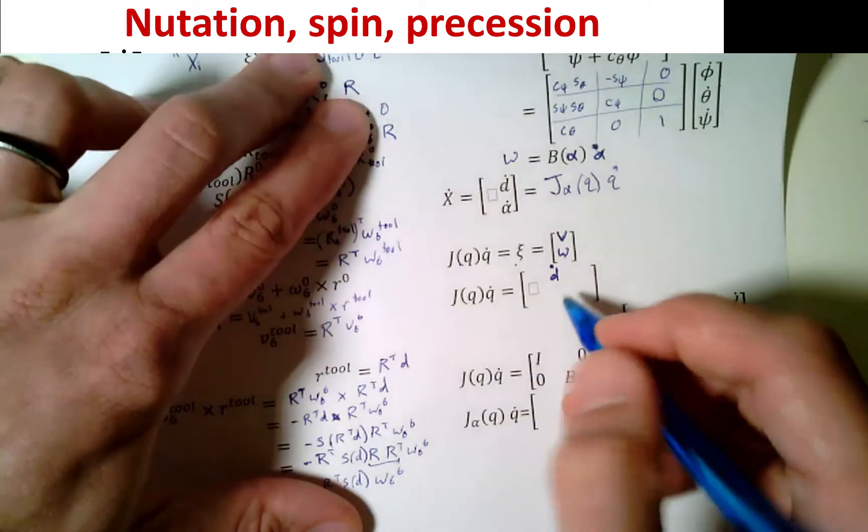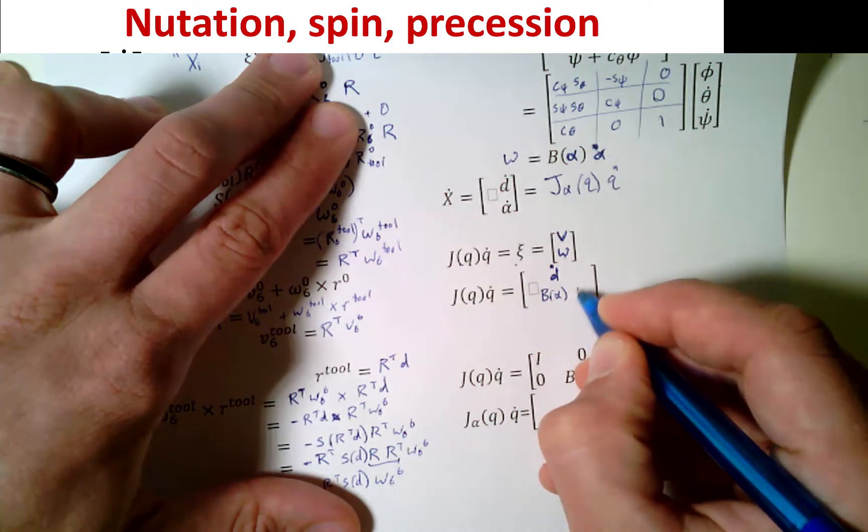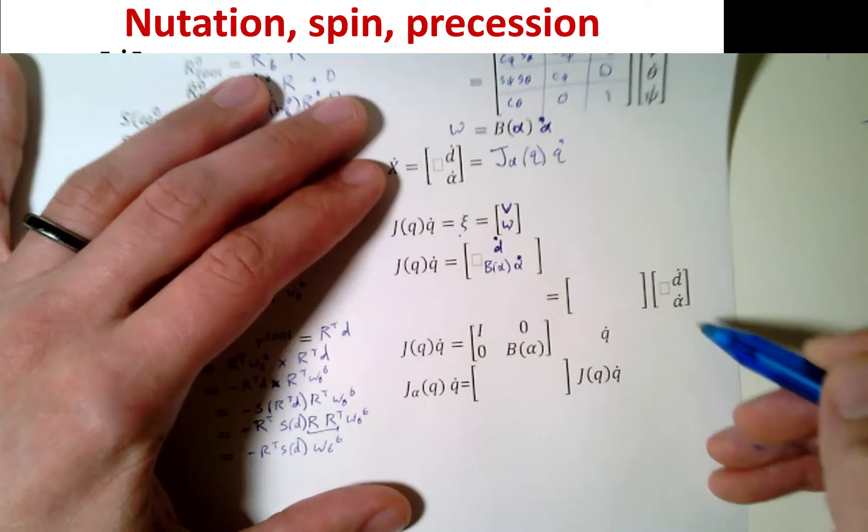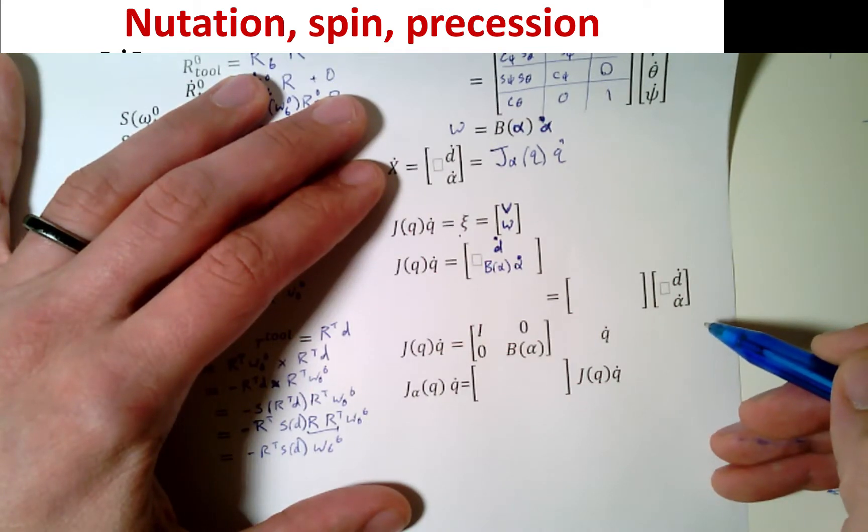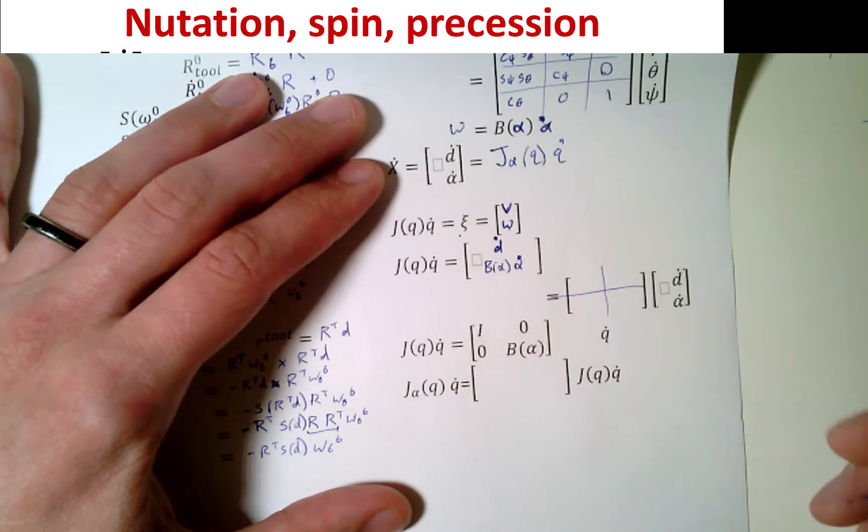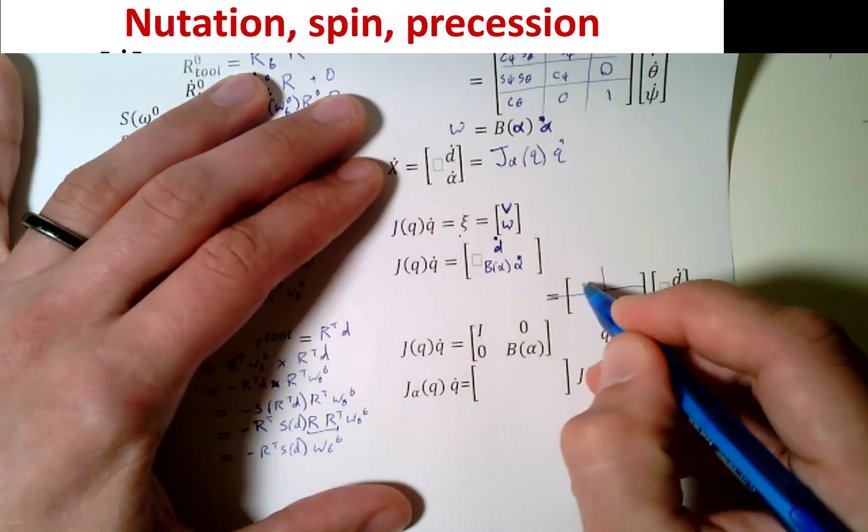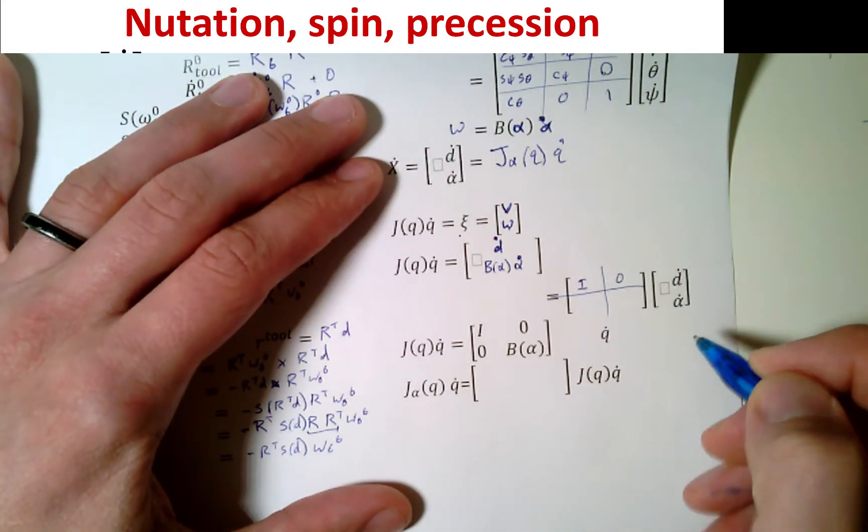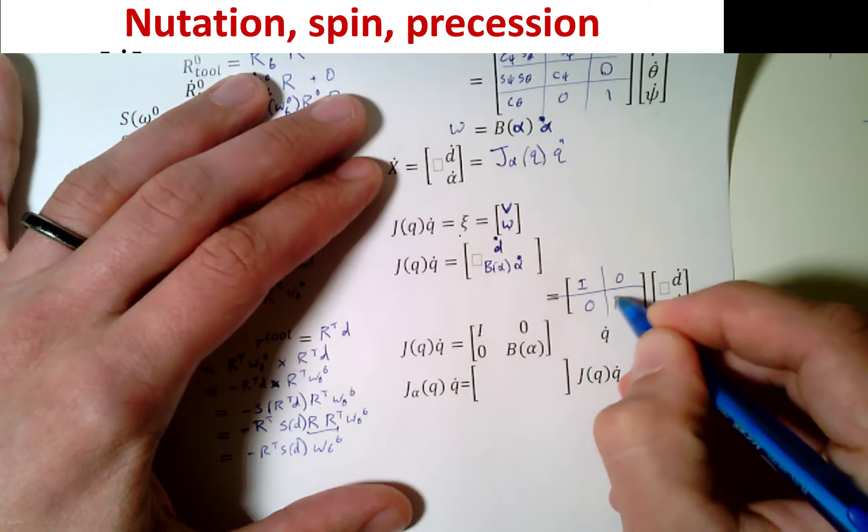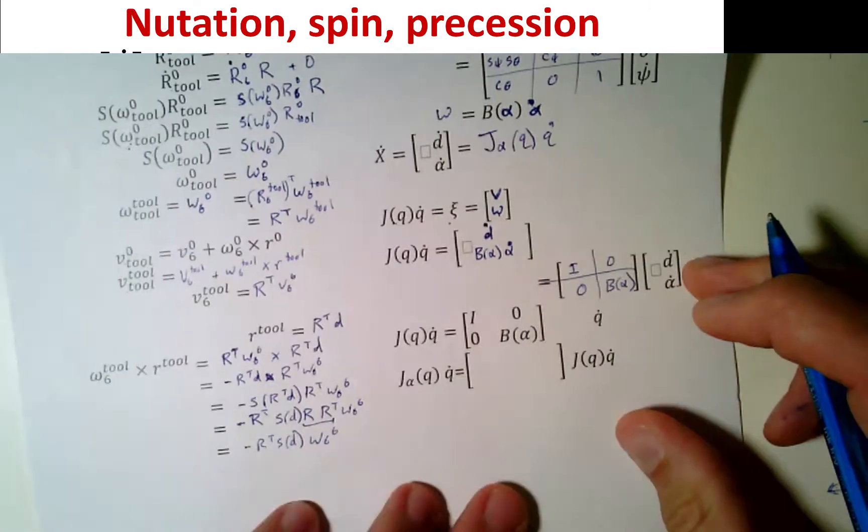And our J of Q, Q dot is going to be d dot times B of alpha, alpha dot. Well, if we want to, again, pull out our D and our alpha dot, it also is going to be a linear matrix, a four by four, which we'll pause the video now so you get a chance to do that. Done. So what's times D dot? It's going to be the I matrix. We've got a zero over here. So there's no alpha value. Zero times our D dot, and we've just got a B of alpha here.